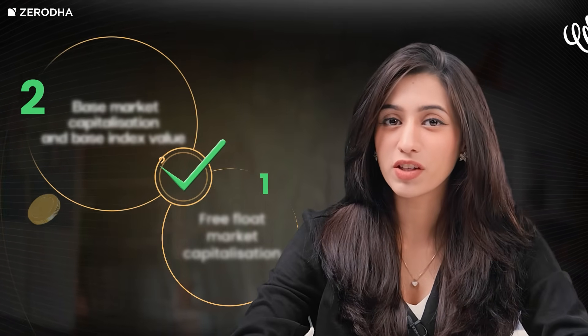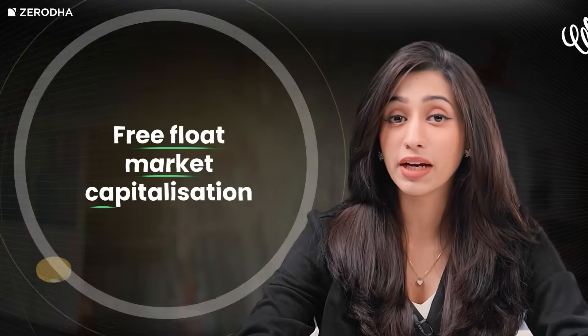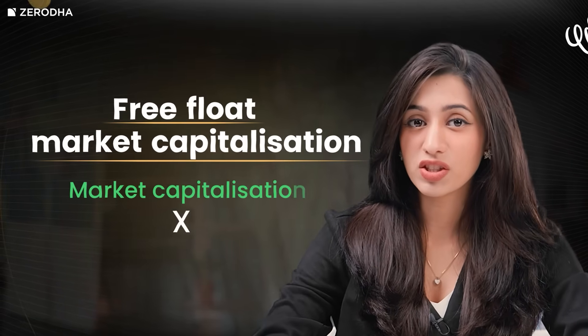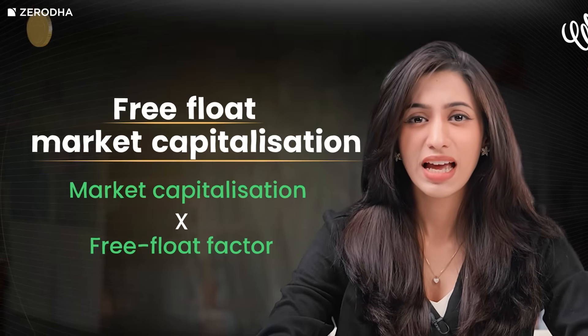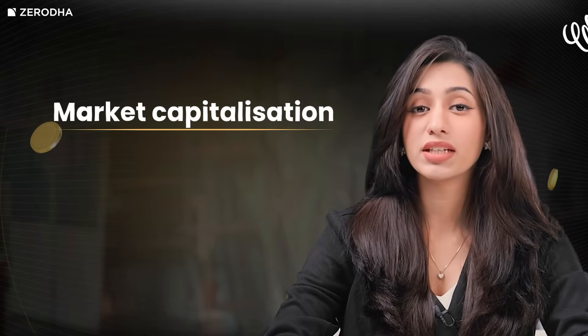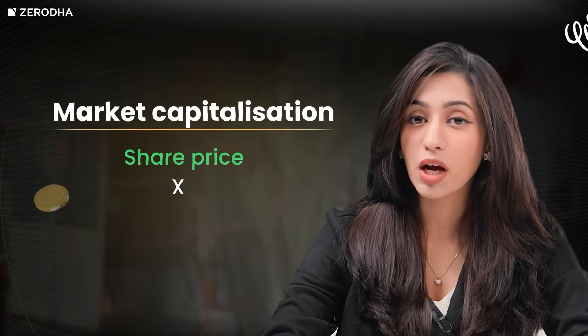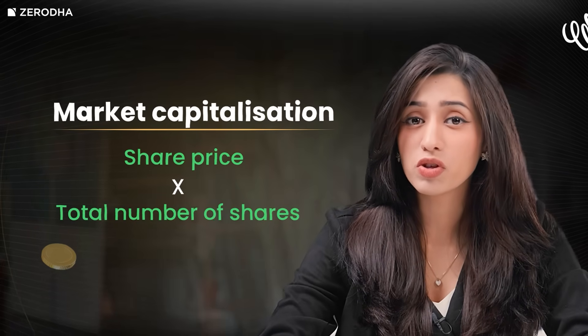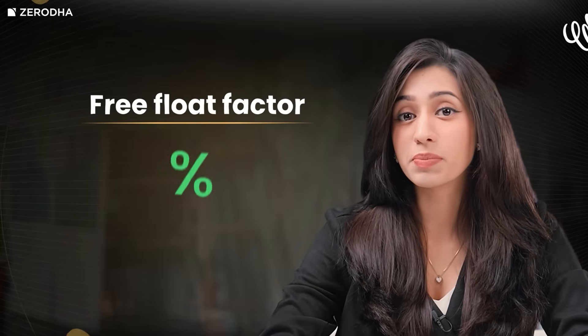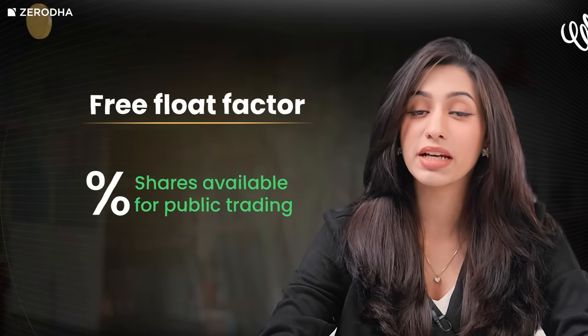The most important part of this formula is the free float market capitalization, which is calculated as market capitalization times free float factor. Market capitalization is calculated by multiplying the price of a company's shares by the total number of shares the company has. The free float factor represents the percentage of shares available for public trading — it excludes shares held by promoters, institutions, and government bodies.